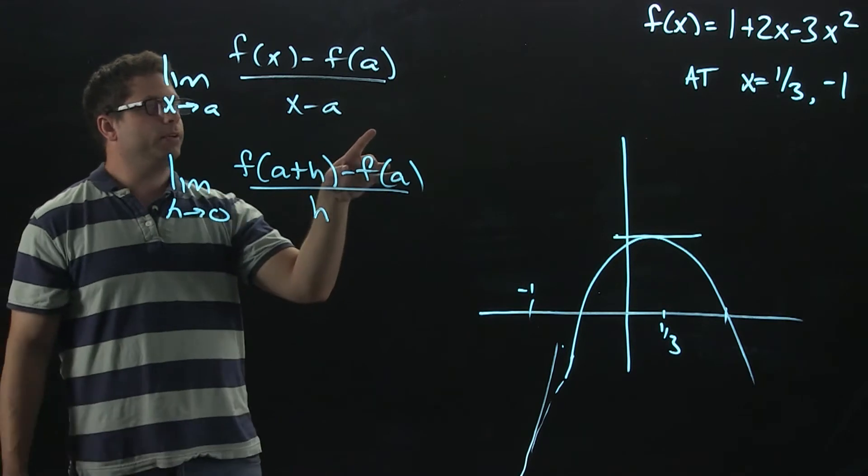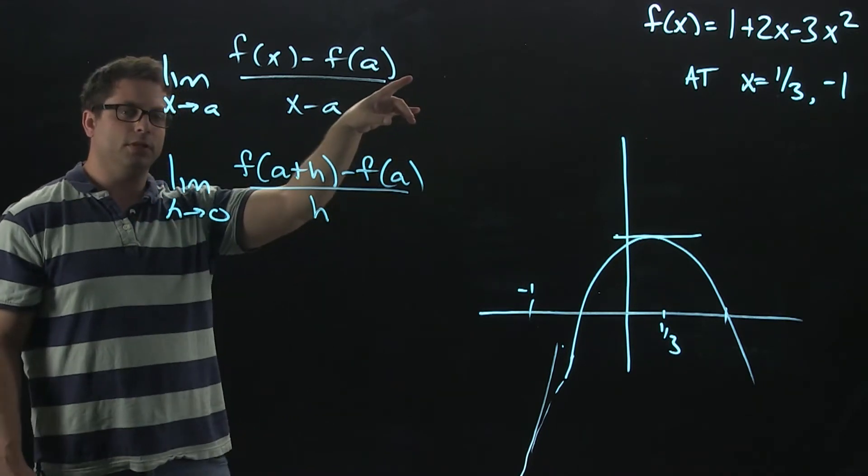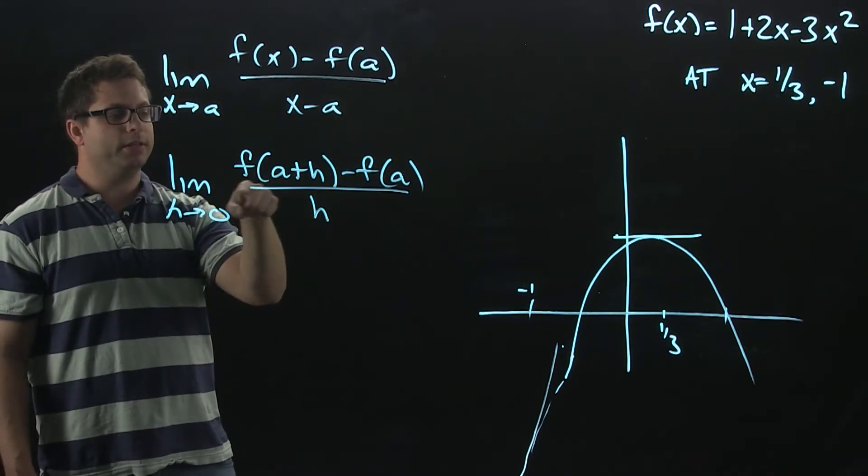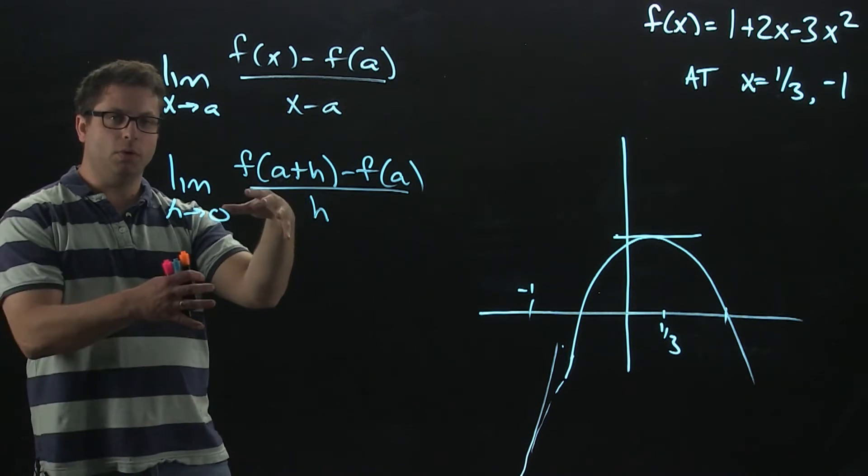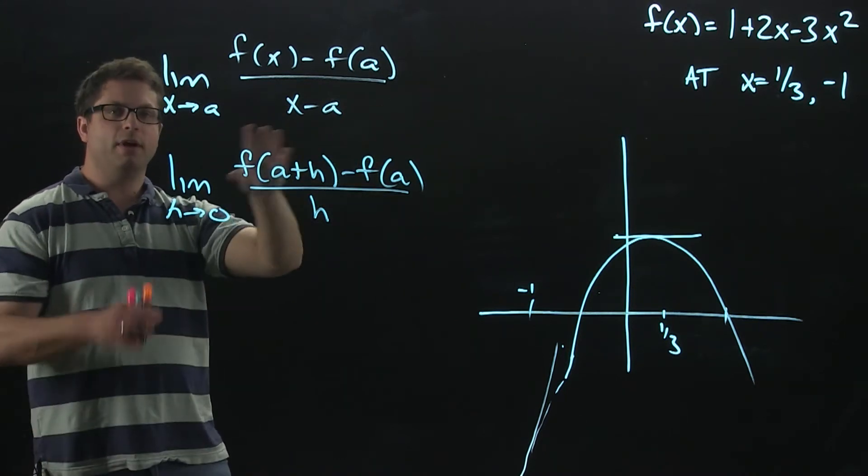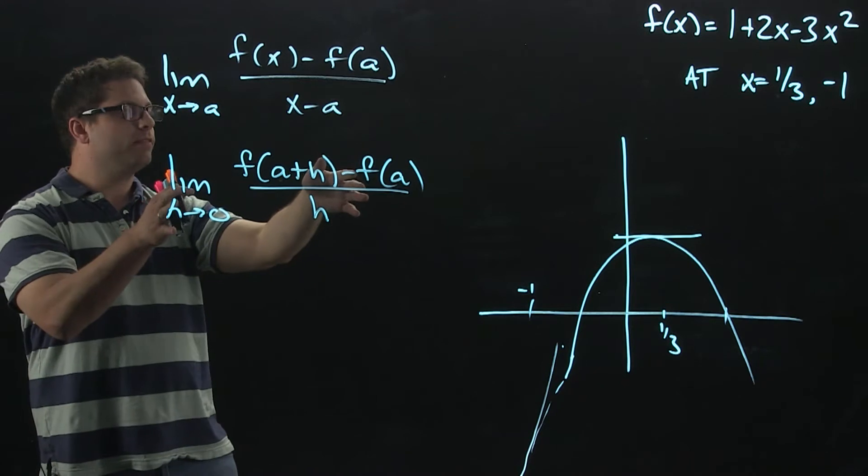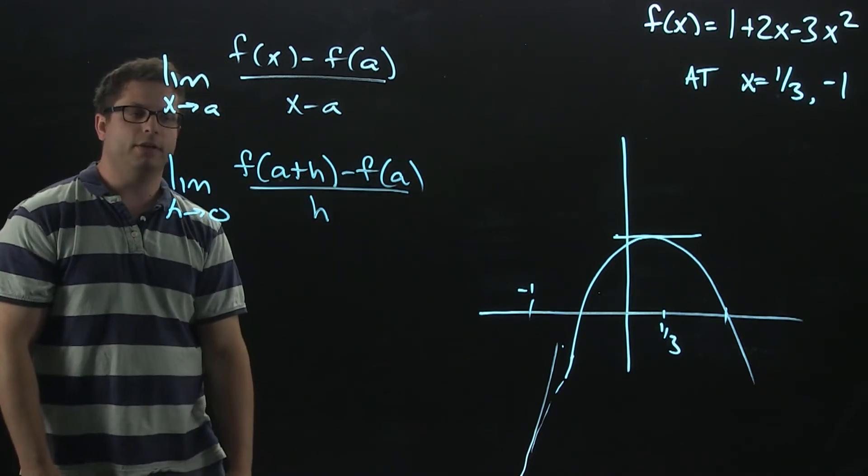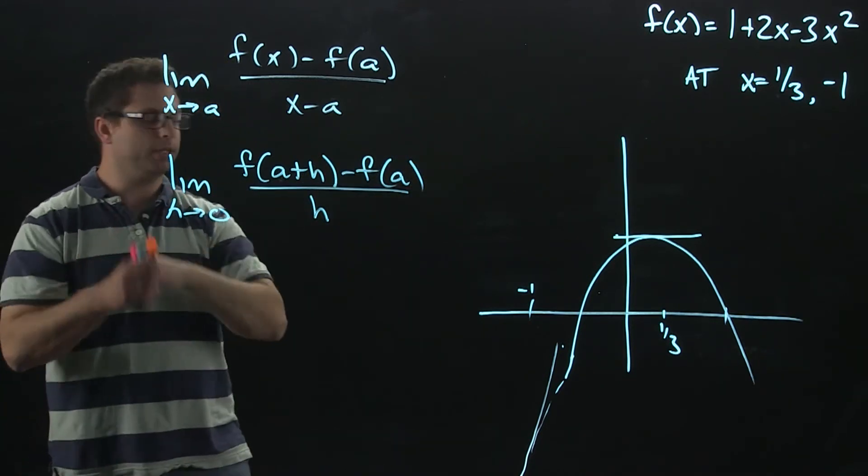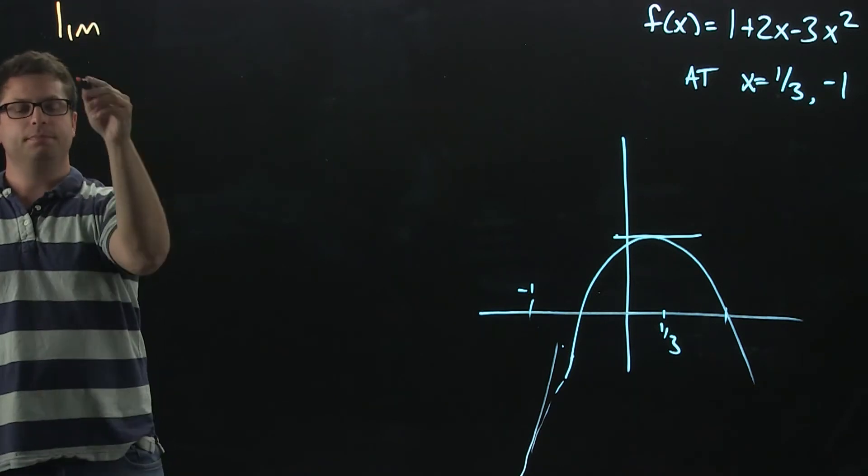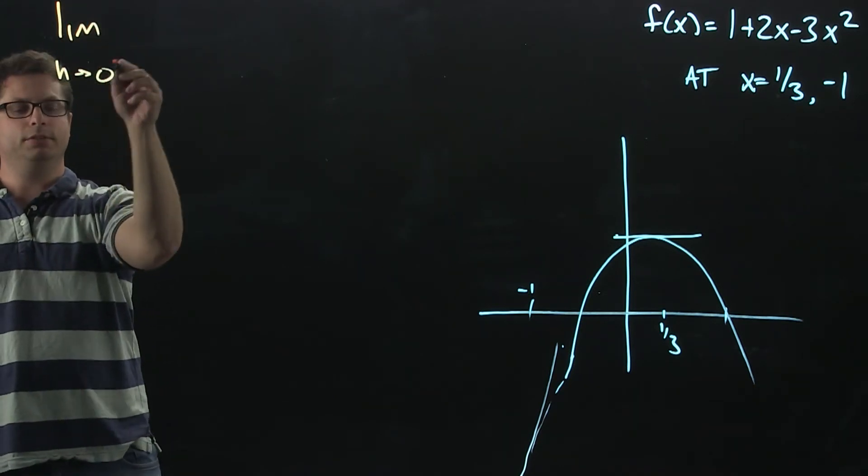Also, since I am going to evaluate two different slopes, I'm actually going to evaluate the limit using a as a placeholder for those values. After I evaluate and get the expression for this, then I will plug in the specific values for a. Let's go ahead and get started. Again, I want to use the limit as h goes to 0.